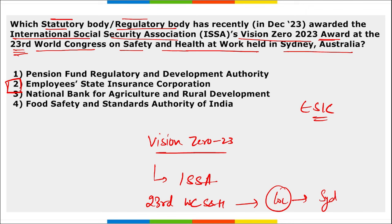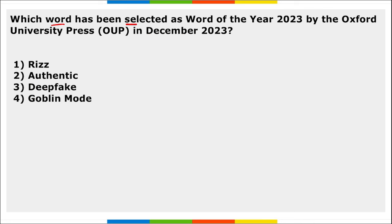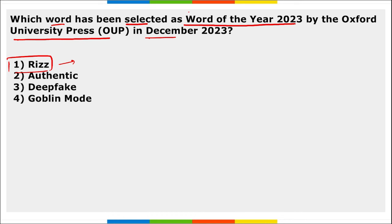Which word has been selected as the Word of the Year 2023 by Oxford University Press in December? It is 'rizz.' Oxford University Press named 'rizz' as Word of the Year 2023 — basically defined as how attractive or charming someone is, a style. This word is now being used by the younger generation and is trending, so it has been declared Word of the Year 2023.